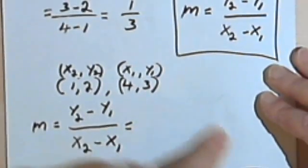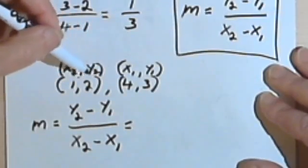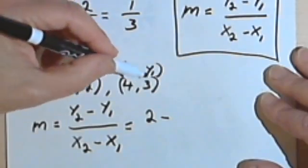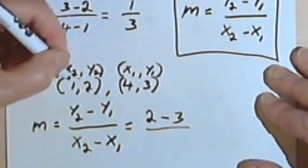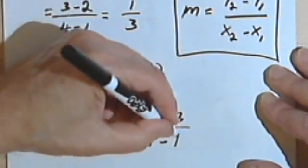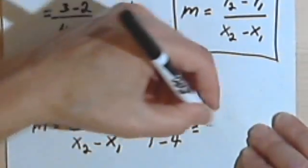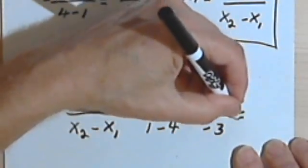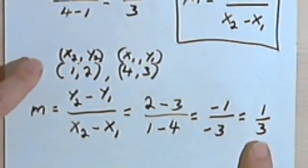So let's get rid of this and do it with the numbers reversed. So now I've got y sub 2 is 2 minus y sub 1, which is 3. x sub 2 is 1 minus x sub 1, which is 4. 2 minus 3 is negative 1. 1 minus 4 is negative 3. Negative 1 over negative 3 is the same as 1 third. So I still get the same answer.